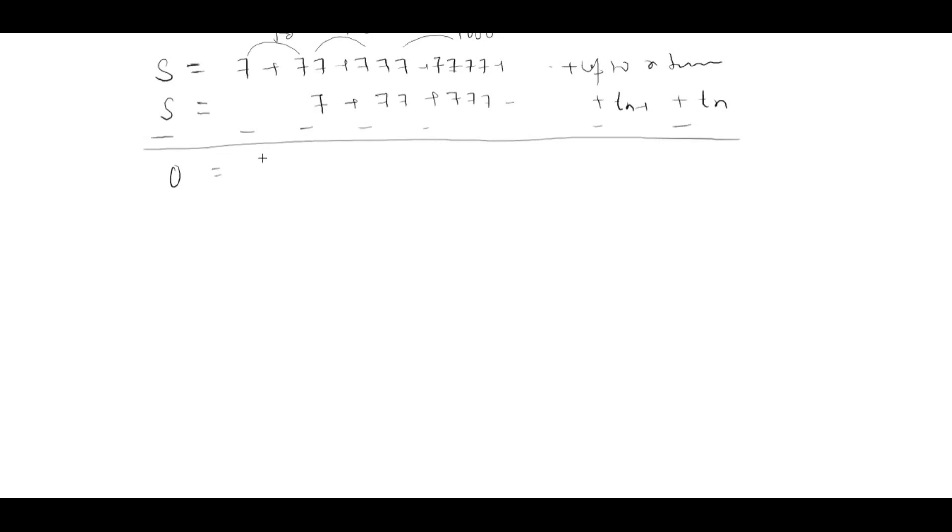I get this as 7, and 77 minus 7 will be 70, then 777 gives 700, then it will be 7000 going up to n terms. Then there is the last term minus t_n because this is not going to get subtracted by anything since I shifted it by one. So the nth term goes to this side, this becomes t_n.